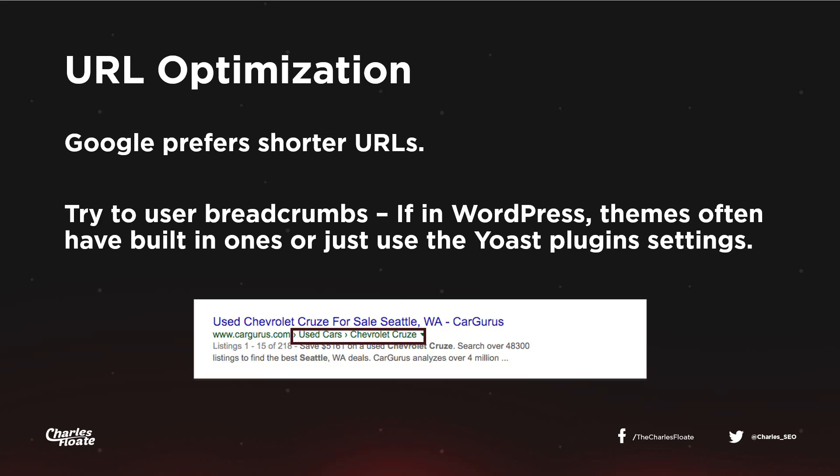For URL optimization: number one, Google prefers short URLs, so making them insanely long for no reason isn't required. Number two, use breadcrumbs. If you're using WordPress, install the Yoast plugin, go into advanced settings, and make sure breadcrumbs is enabled. Nowadays many themes include built-in breadcrumb settings, so you can use those rather than manually inserting code via Yoast.